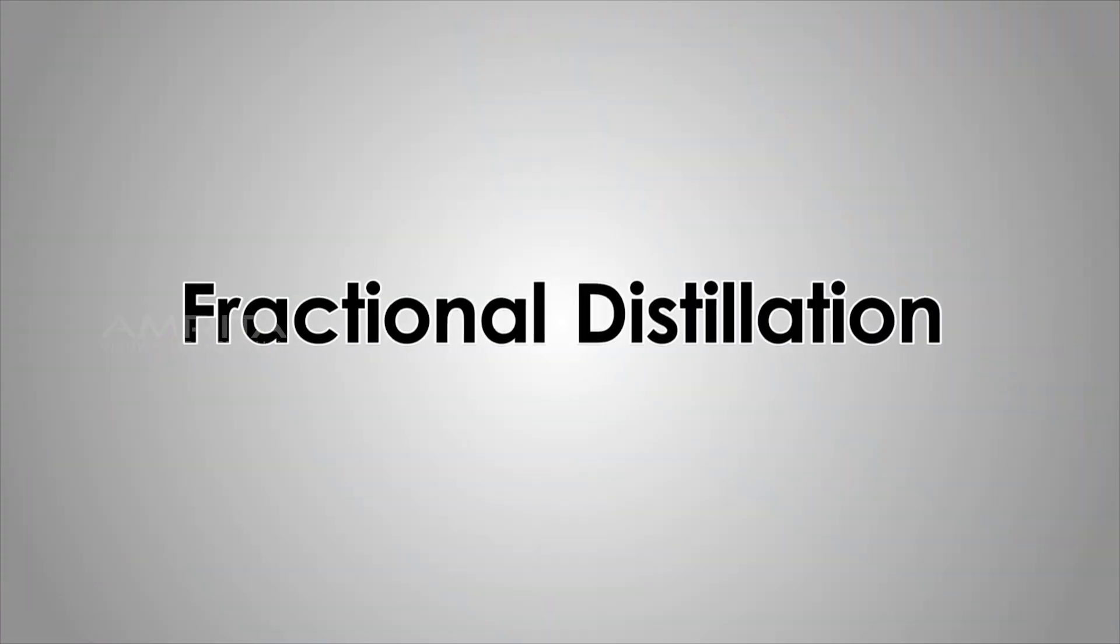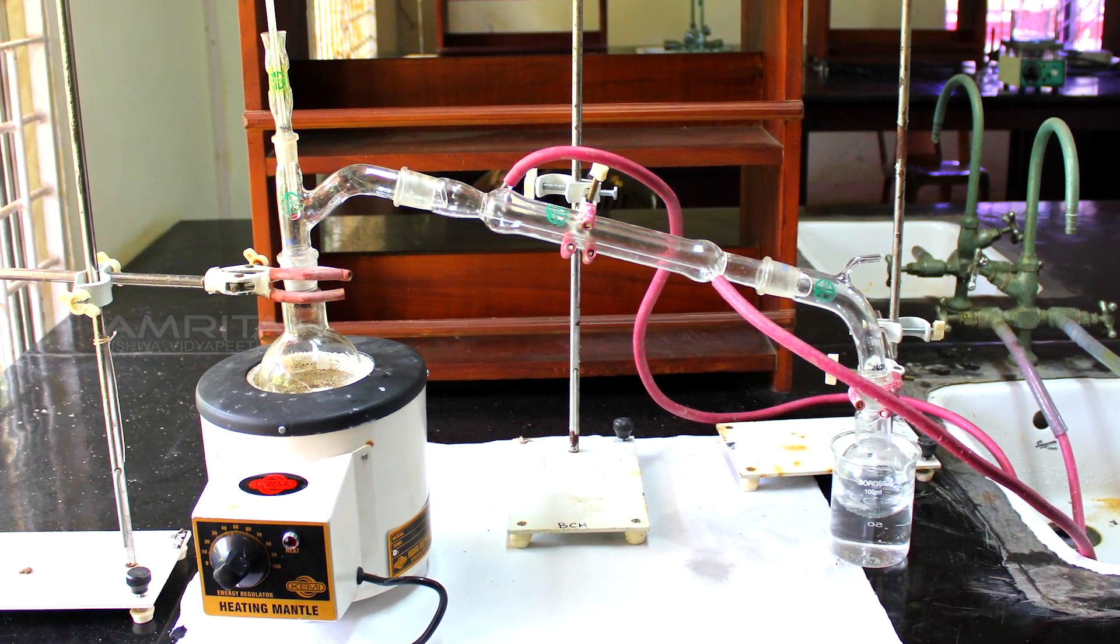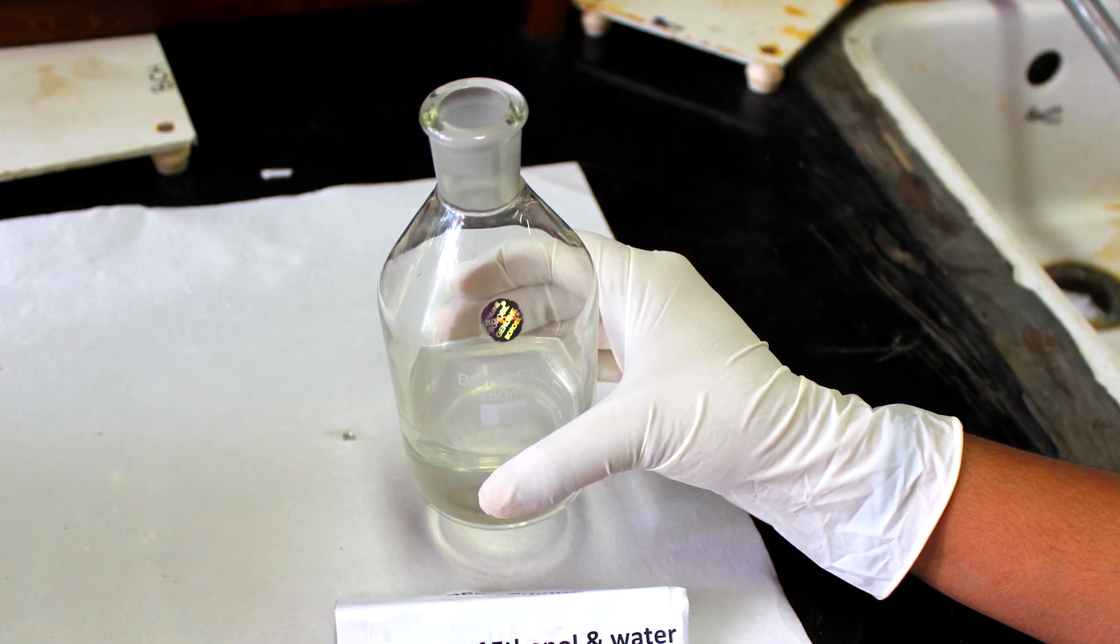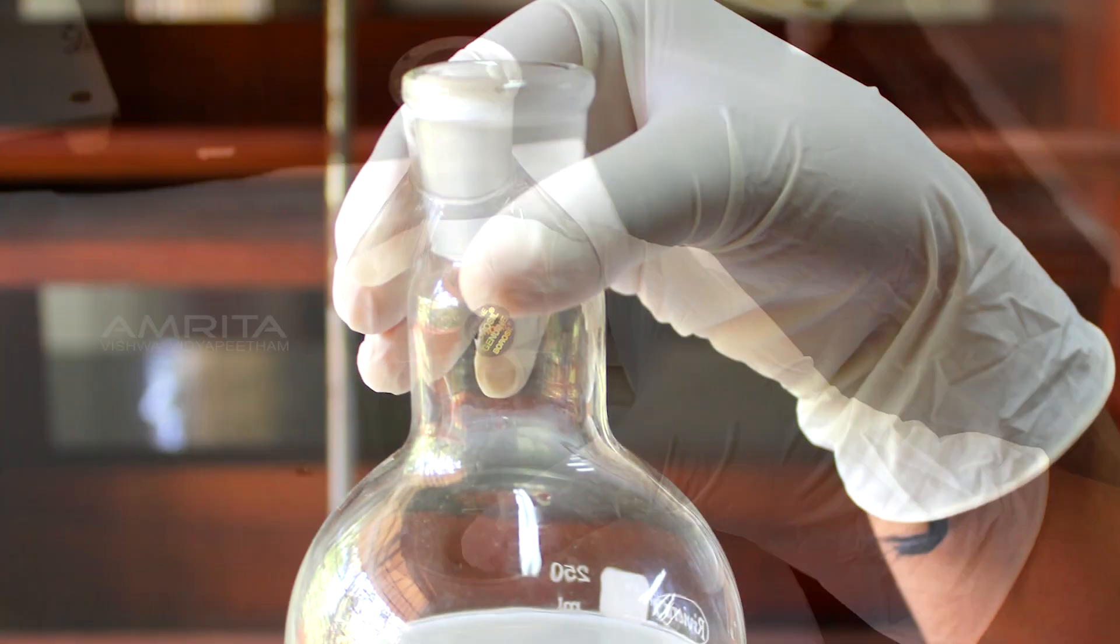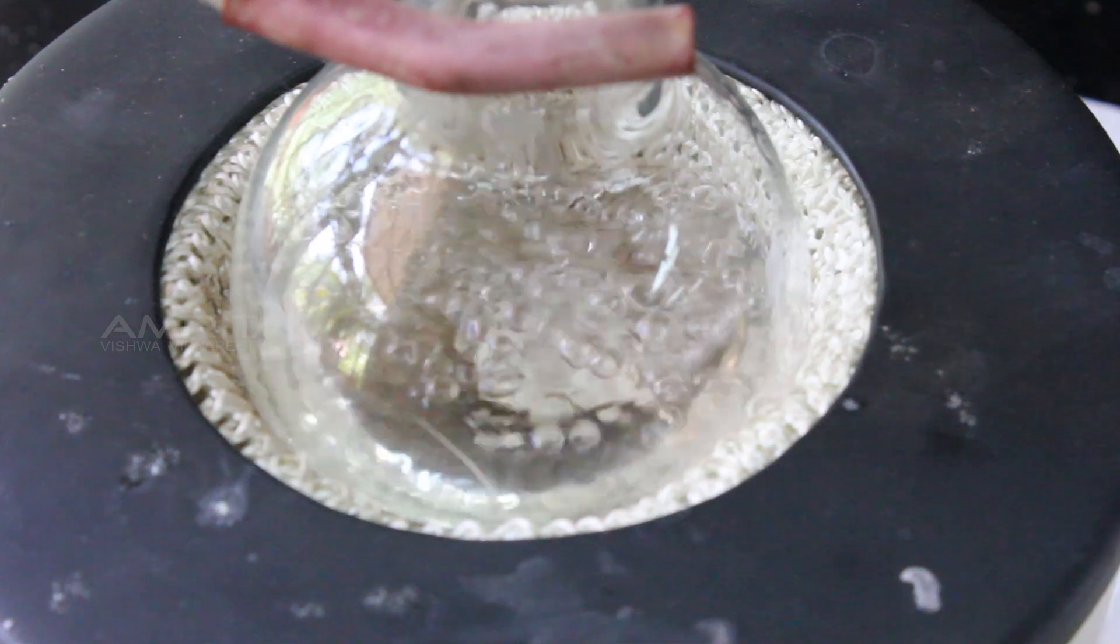Fractional Distillation. Fractional distillation is used for the separation of a mixture of two or more miscible liquids for which the difference in boiling points is less than 25 Kelvin.